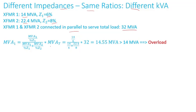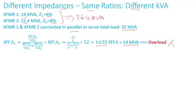Applying the same equation and plugging in the numbers, transformer one will carry 14.55 MVA, which slightly exceeds its rating of 14 MVA. So transformer one will be overloaded. Notice the total capability of both transformers combined is 36.4 MVA, and at a load of 32 MVA — well less than 36.4 — I'm already overloading transformer one.